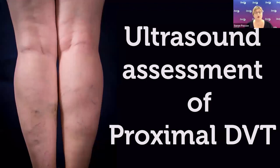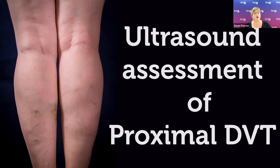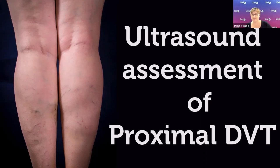Today we are looking at ultrasound assessment of proximal DVT. An unrecognized or untreated deep vein thrombosis in the lower extremities is a major concern because a clot can dislodge and lead to pulmonary embolism and hemodynamic instability. Point-of-care ultrasound with compression is a quick and non-invasive way to assess for DVT, with very high sensitivity and specificity, so you can determine whether anticoagulant therapy is necessary.